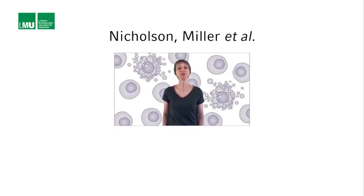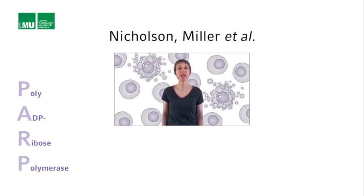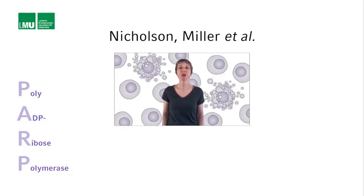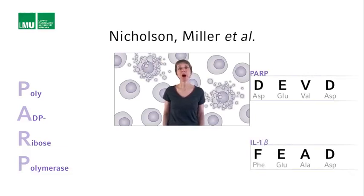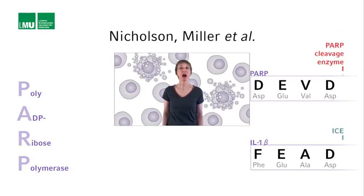What had been found by a couple of investigators a few years earlier is that a protein called PARP, which stands for poly-ADP ribose polymerase, is cleaved in apoptotic cells. Interestingly, the amino acid sequence of one of the cleavage sites of PARP is similar to the amino acid sequence of one of the cleavage sites in interleukin-1-beta, which is cleaved by ICE. It is DEVD in the case of PARP, and FEAD in the case of interleukin-1-beta. In both cases, cleavage occurs after the fourth amino acid, the aspartic acid residue.